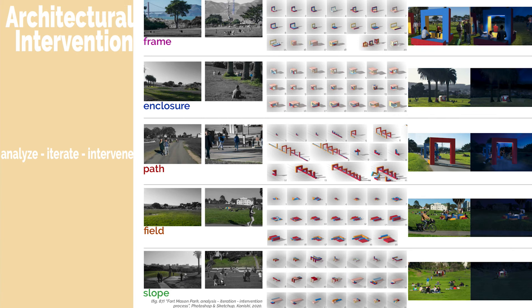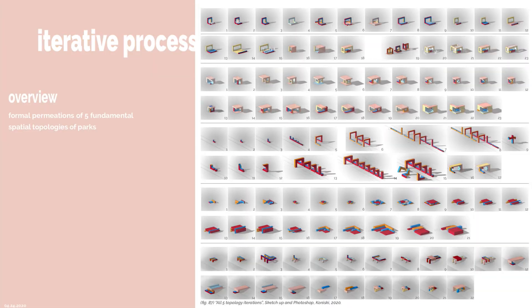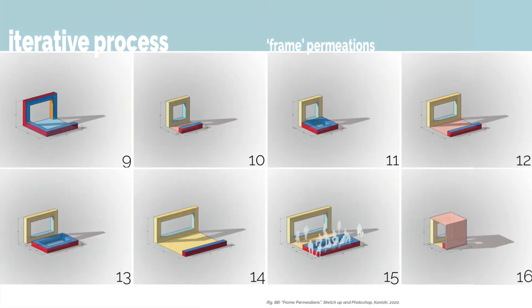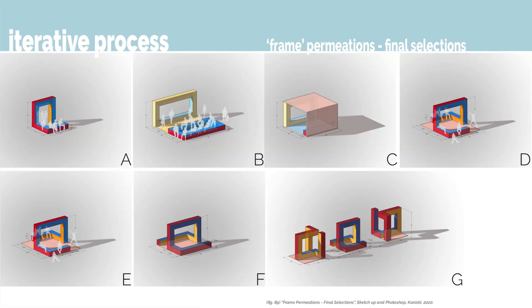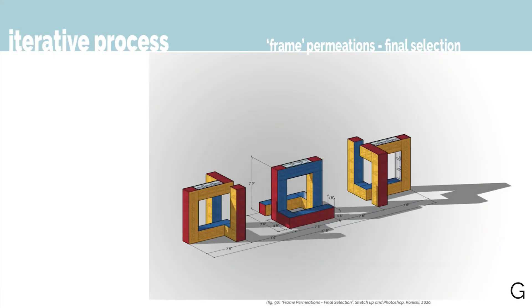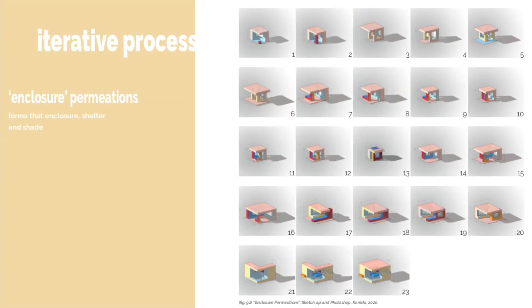The final interventions of this thesis utilize the five topologies and a sequential iterative design process: the parks are analyzed, the topologies are iterated, and an intervention is picked and sited. The frame permeations are forms that direct, orient, and frame the main view of the park, with activity visualized and a final selection made for the frame topology.